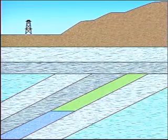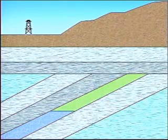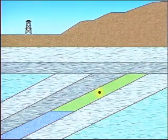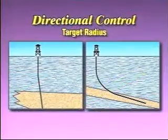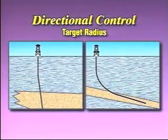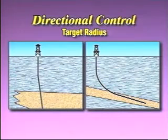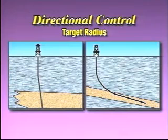Our goal in planning a well profile is to determine the most economic path from the surface to the bottom hole location. We first have to determine the target coordinates with respect to the proposed surface location. At the same time, we have to assign the target radius based on our well objectives.